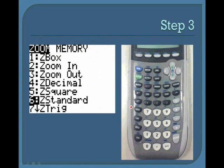Then you will see options on the side. You must click on the sixth option, also known as Z-Standard. Then click enter.